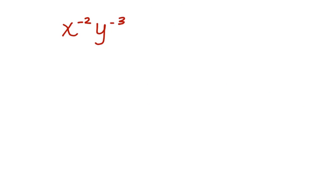What about if we have this? x to the negative 2, y to the negative 3. We can rewrite this whole term and put it all over 1: 1 over x squared, y cubed. This is our final answer.